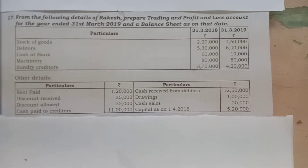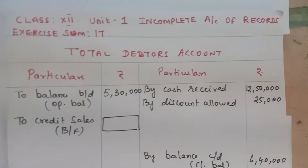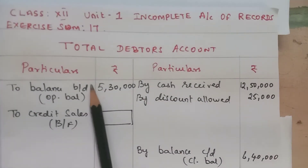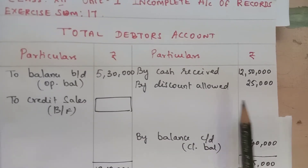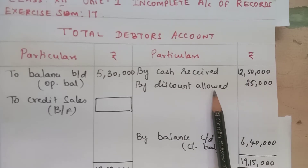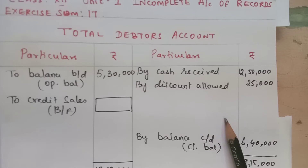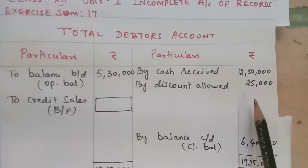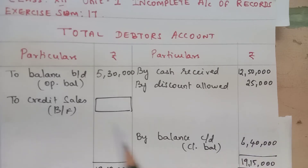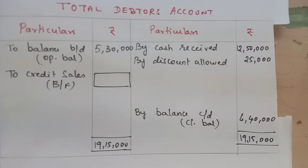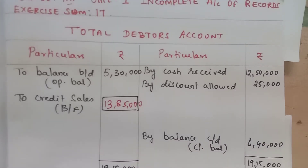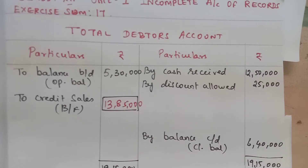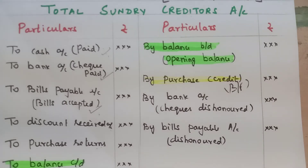So this is the total debtors account for sum number 17. Opening balance is $5,30,000. Closing balance is $6,40,000. Cash receipt from debtors is $12,50,000. Discount allowed is $25,000. The balancing figure gives us the credit purchase.